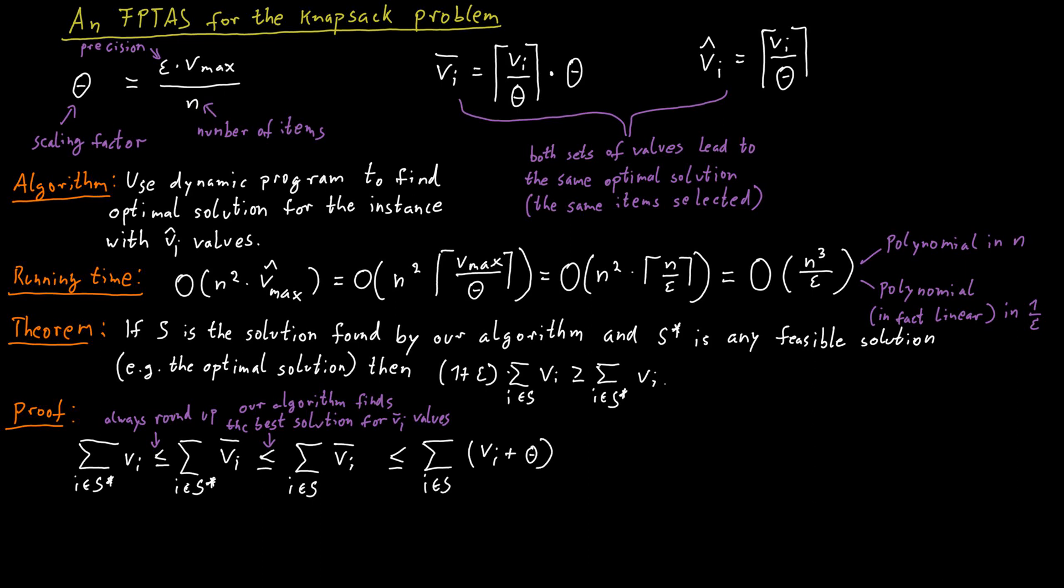So V_i bar is bounded from above by V_i plus theta. And this is still true if we sum up over all the objects in the set S. There are at most n items in our set S. So we can bound the second term in the sum by n times theta. We plug in our definition of theta, which was epsilon times V_max divided by n. The n cancels out and we are left with epsilon times V_max.